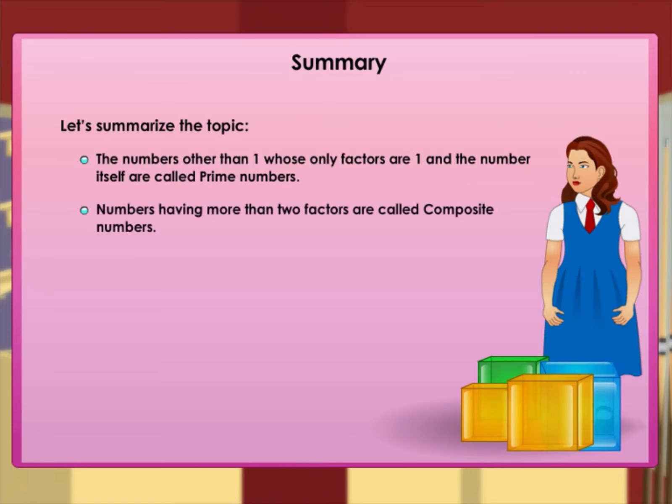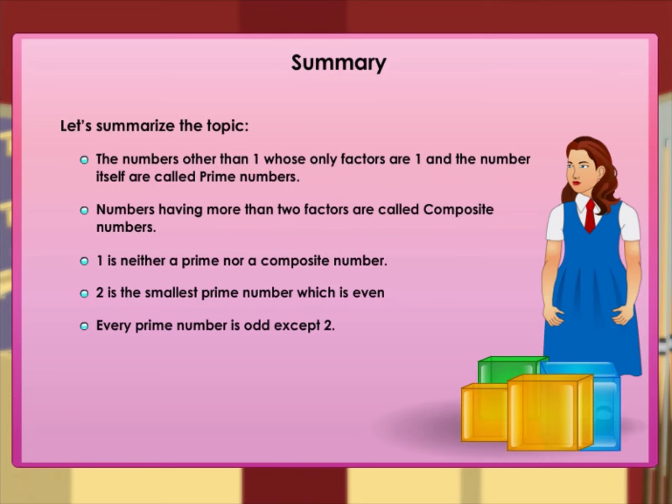The numbers having more than two factors are called composite numbers. One is neither prime nor a composite number. Two is the smallest prime number which is even. Every prime number is odd except two. All odd numbers are not prime numbers.